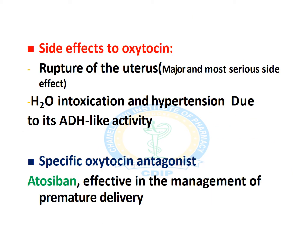Side effects of oxytocin: the major side effect is rupturing of the uterus, which is a serious concern. Also, due to its antidiuretic hormone-like activity, water intoxication and hypertension may result. For that, the specific oxytocin antagonist atosiban is effectively used in the management of premature delivery. Atosiban behaves as a tocolytic agent — it relaxes the uterine muscles.